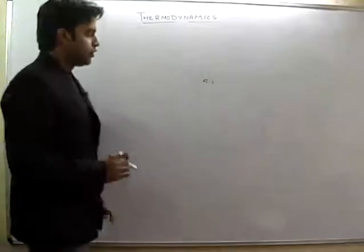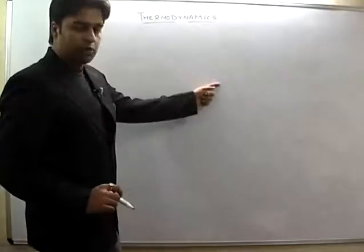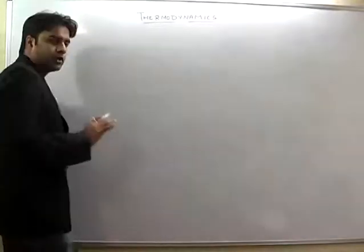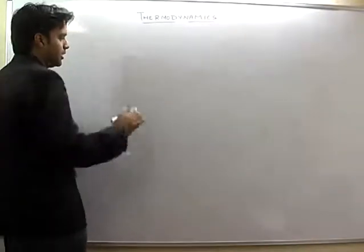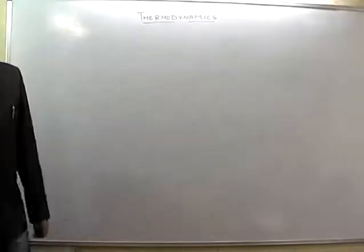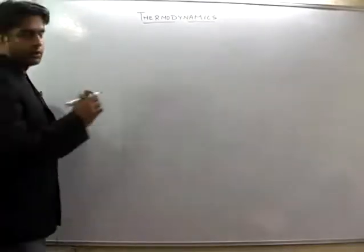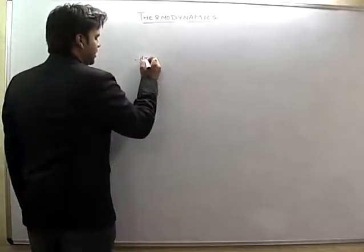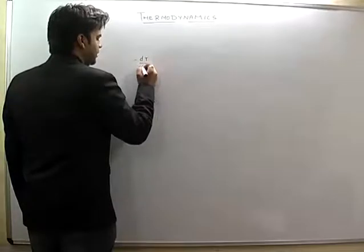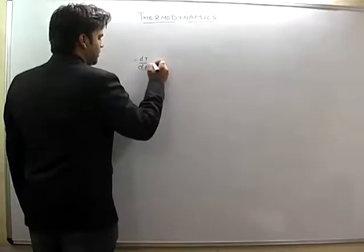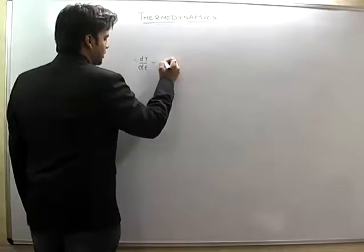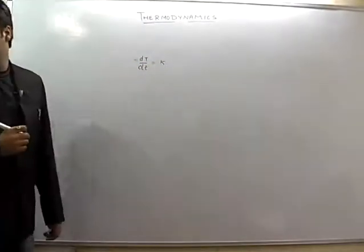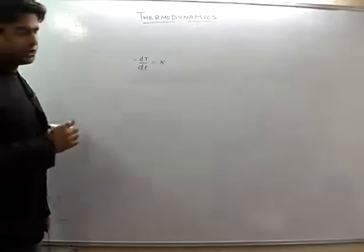Newton's cooling law — the derivation is in your booklet, and although it is not very important, you should remember the formula, which is: minus dT by dt will be equal to k into T minus T₀.